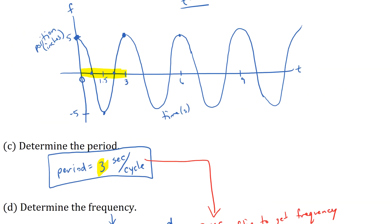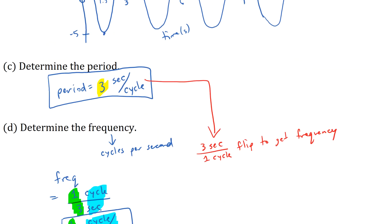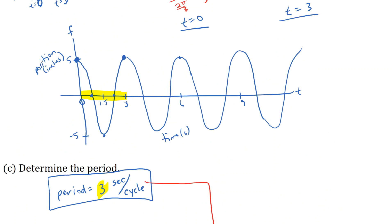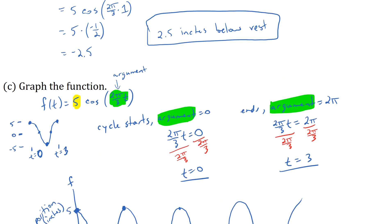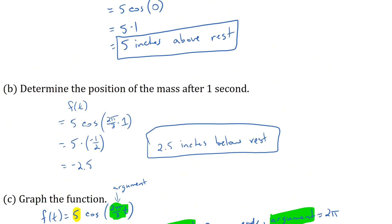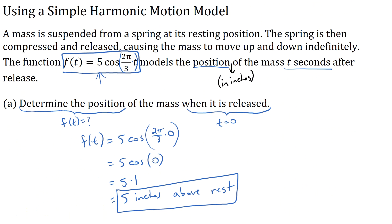You can also ask about the amplitude, which we've already noted is five. This covers the basics of harmonic motion and how to use a model or function to represent it.